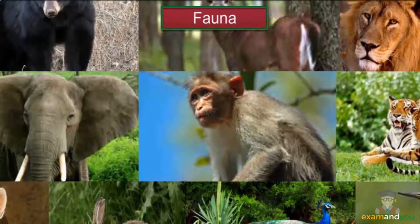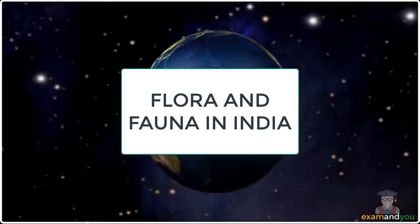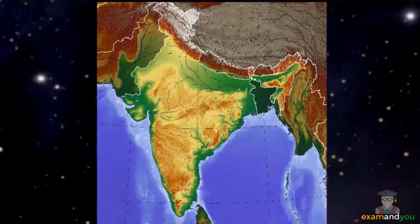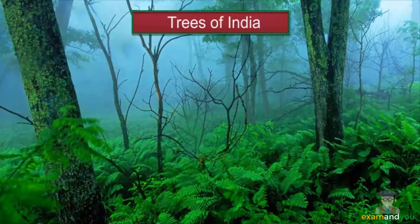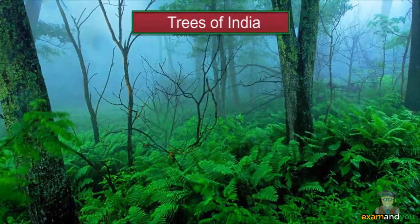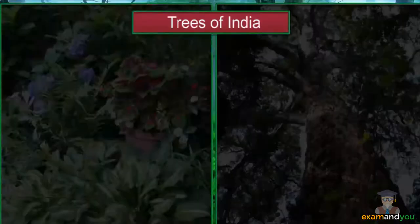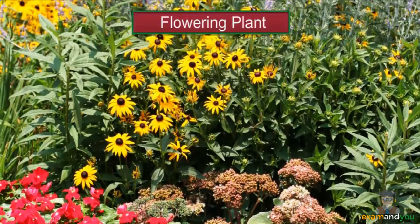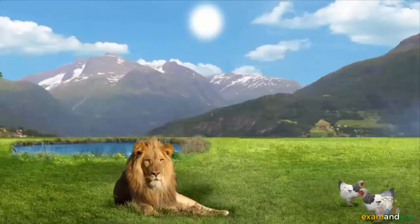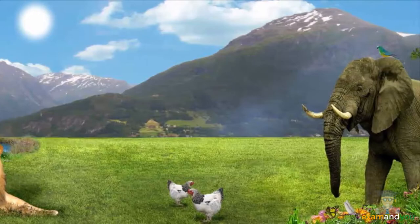All the species of plants and trees found in a region are collectively called the flora of the region. The species of animals found in a region are collectively called the fauna. India has a rich biodiversity and is home to around 1.6 million, or nearly 8%, of all the species of flora and fauna found in the world. India is home to around 47,000 species of flora, and around 15,000 species of plants are indigenous to India. India is also home to over 81,000 species of fauna.